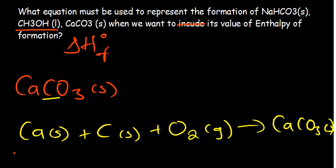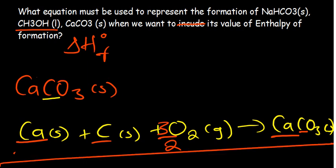We need to balance everything. Calcium is balanced — one on each side. Carbon is balanced — one on each side. For oxygen, we have 3 on the product side and O₂ (with 2) on the reactant side, so we put 3/2 in front of O₂. That way the 2 cancels and we're left with 3. This is the equation required to represent the formation of calcium carbonate.